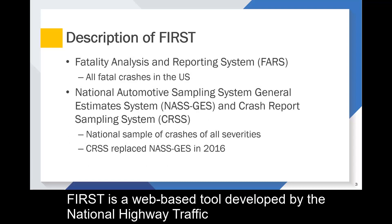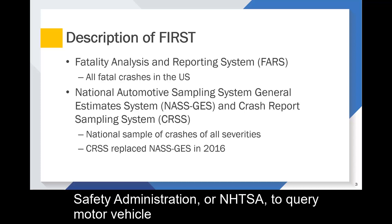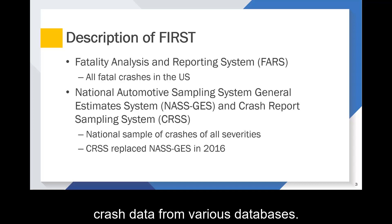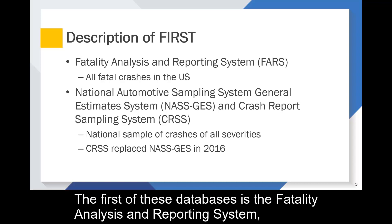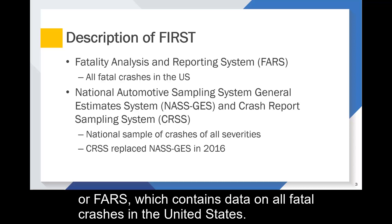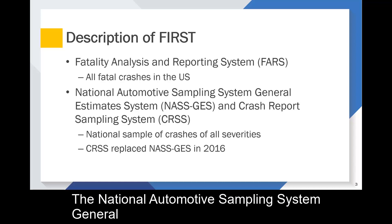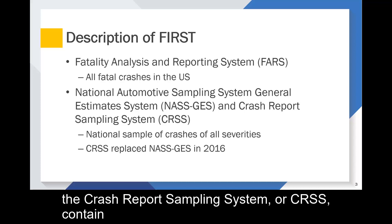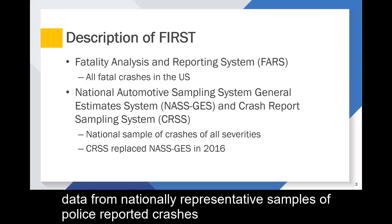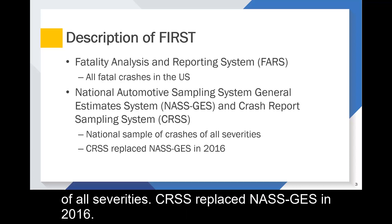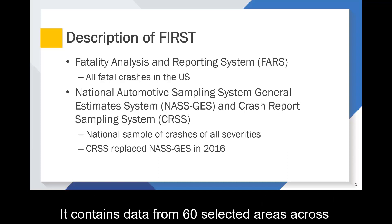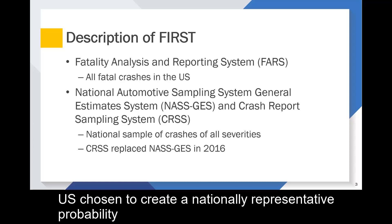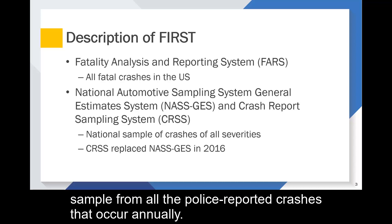FIRST is a web-based tool developed by the National Highway Traffic Safety Administration, or NHTSA, to query motor vehicle crash data from various databases. The first of these databases is the Fatality Analysis and Reporting System, or FARS, which contains data on all fatal crashes in the United States. The National Automotive Sampling System General Estimates System, or NASGS, and the Crash Report Sampling System, or CRIS, contain data from nationally representative samples of police-reported crashes of all severities. CRIS replaced NASGS in 2016, and contains data from 60 selected areas across the U.S. chosen to create a nationally representative probability sample from all the police-reported crashes that occur annually.